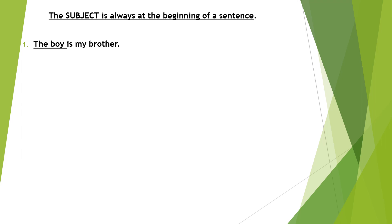Let's take a look at a few examples. The first sentence: 'The boy is my brother.' So the subject is 'the boy'. We are talking about a boy — a person. So this is called a subject.